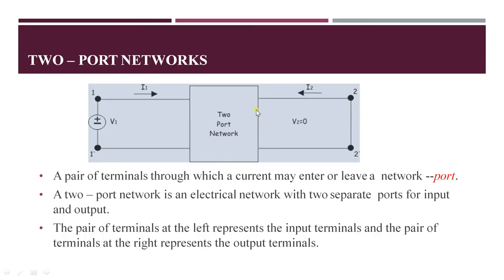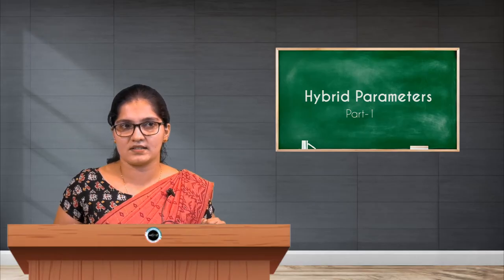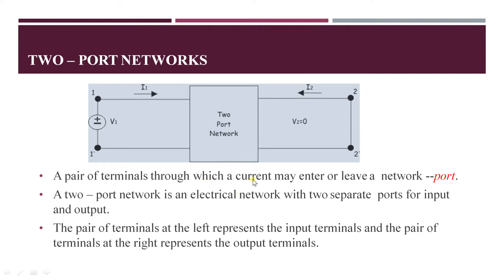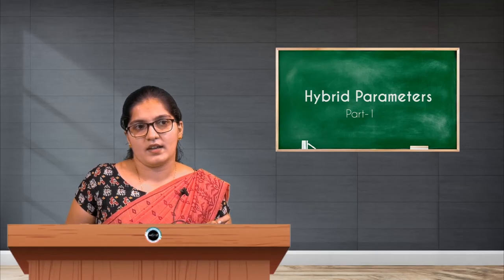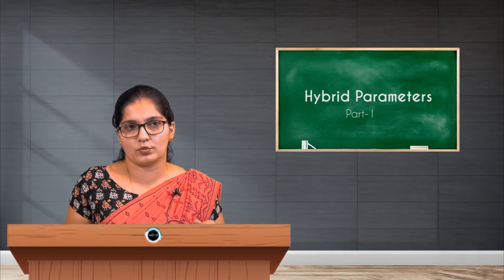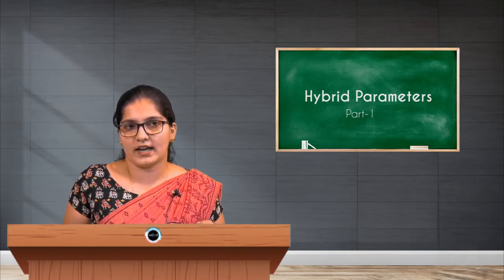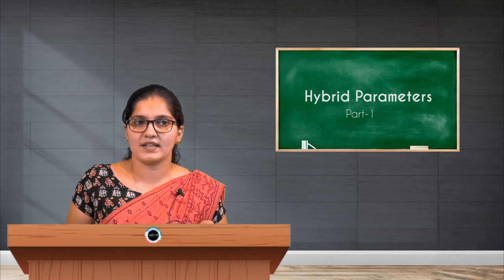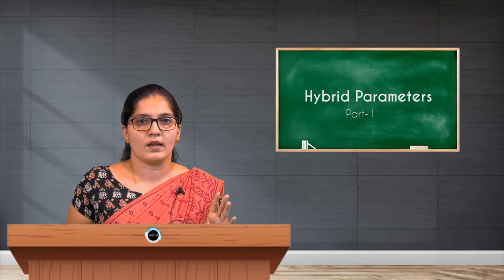Before moving on to H parameters, let us see what a two-port network is. A two-port network can be represented as a pair of terminals through which a current may enter or leave — this is called a port. In a two-port network, the term port means a pair of two terminals. It is an electrical network with two separate ports for input and output, giving four terminals in total.